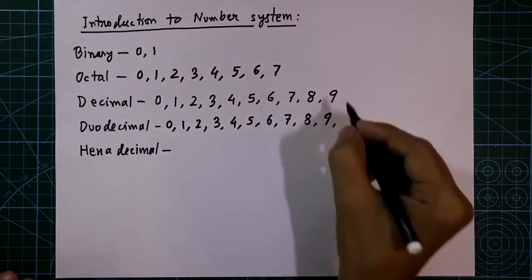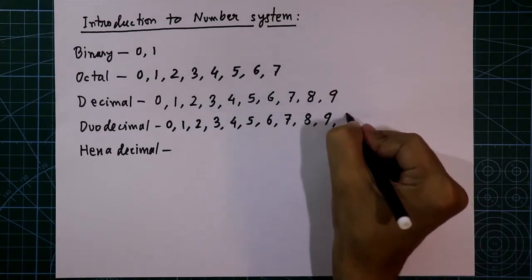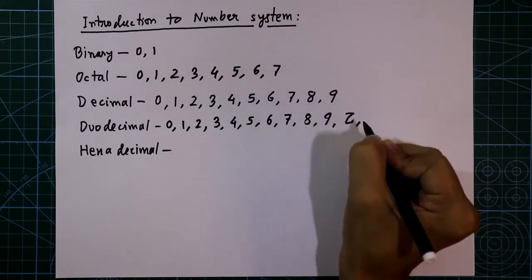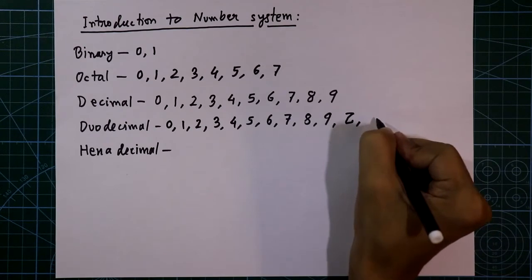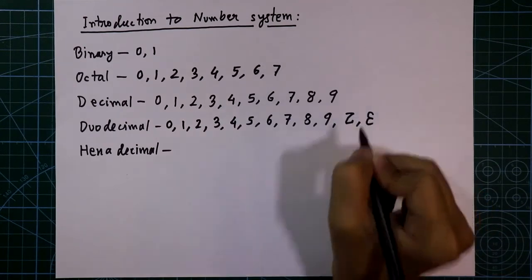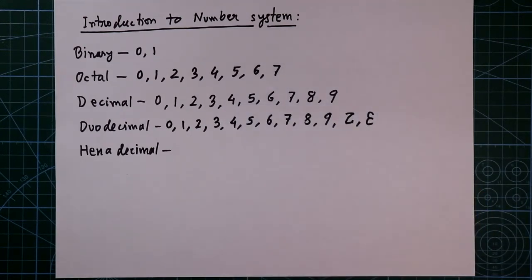And after 9, this is the symbol. It is inverted 2. And after that, we have this symbol. It is inverted 3. The inverted 2 is equivalent to 10 in decimal number system and inverted 3 is equivalent to 11 in decimal number system.